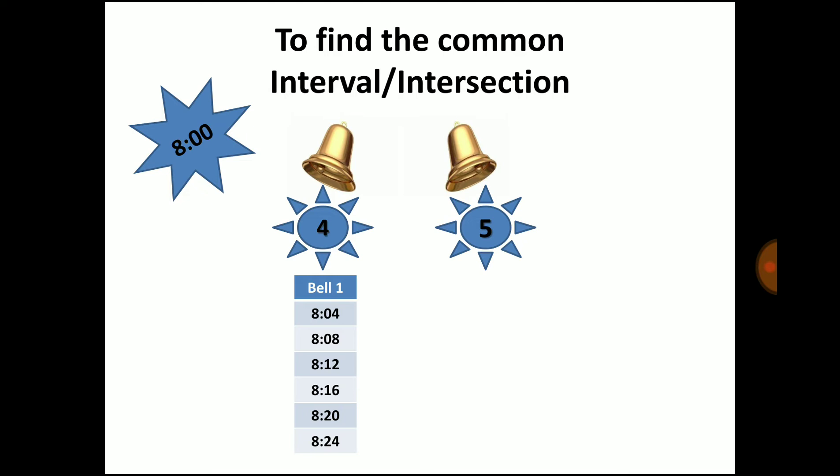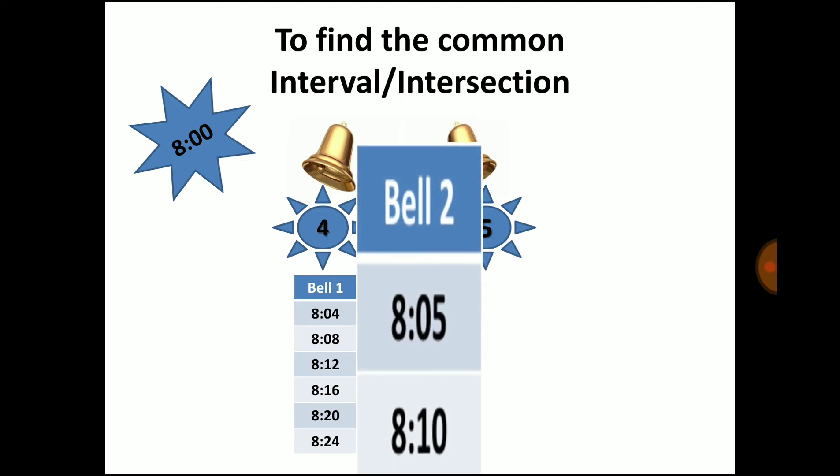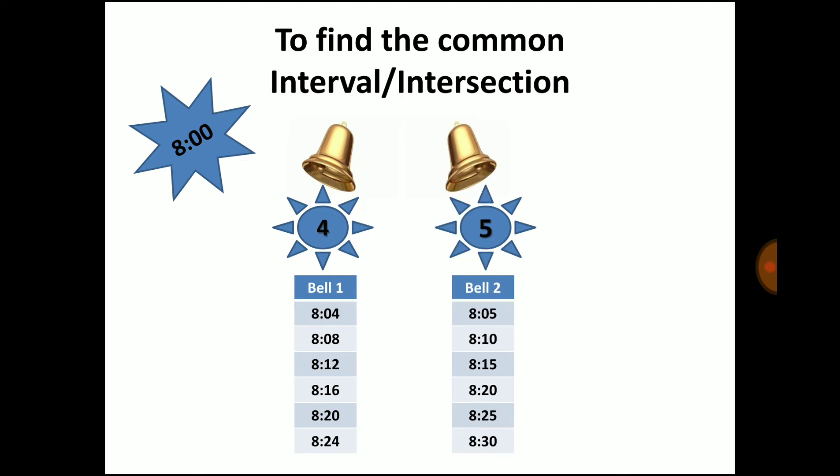In the scenario of bell 2, the first bell ring after 8 AM is 8:05 AM, second bell rings at 8:10 AM because here the interval is 5 minutes. Third bell rings at 8:15, then 8:20, then 8:25, then 8:30 and so on.